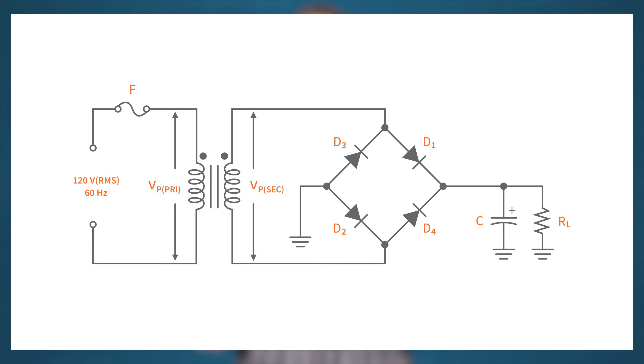While a half-wave rectifier uses only a single diode, a bridge-type full-wave uses four diodes. It uses four diodes in a bridge topology to rectify both the positive and negative half-cycles of the AC input.